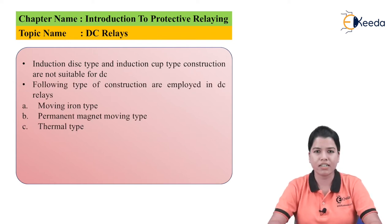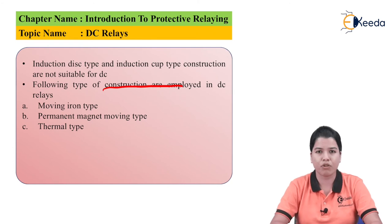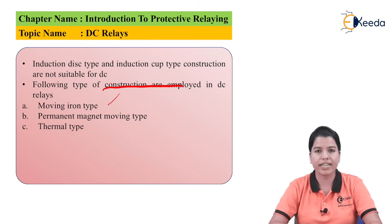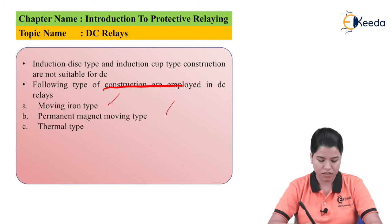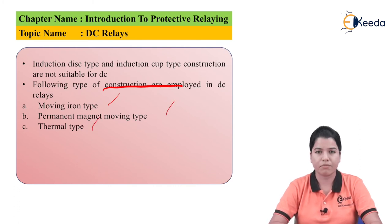For DC relay construction, the following types are employed: first, moving iron type; second, permanent magnet moving coil type; and third, thermal type.